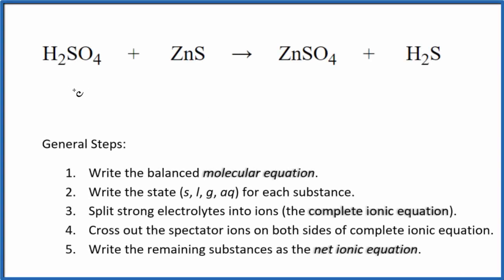In this video we'll write the balanced net ionic equation for H2SO4 plus ZnS. This is sulfuric acid plus zinc sulfide. So the first thing we need to do is balance the molecular equation. If we look at this, the molecular equation here, it's already balanced. So that's kind of nice.